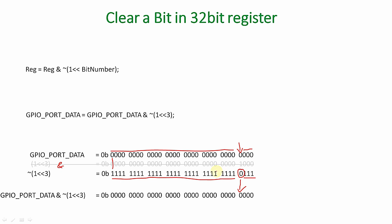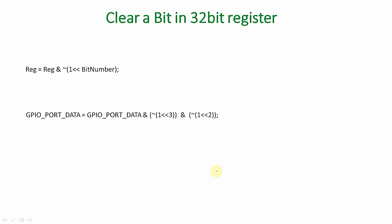So clearing works on AND operation while setting works on OR operation — that is the major difference. You can also clear multiple bits in one statement: GPIO_port_data = GPIO_port_data & ~(1 << 3) & ~(1 << 2), and so on. You can clear as many bits as you want in a register at a time in a single statement.